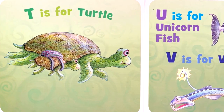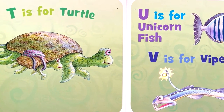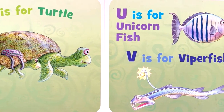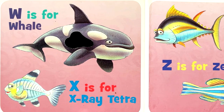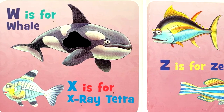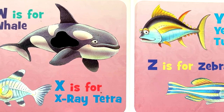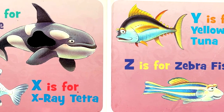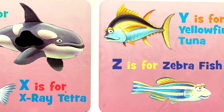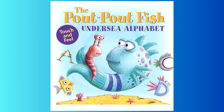T is for Turtle. U is for Unicorn Fish. V is for Viperfish. W is for Whale. X is for X-Ray Tetra. Y is for Yellowfin Tuna. Z is for Zebra Fish.